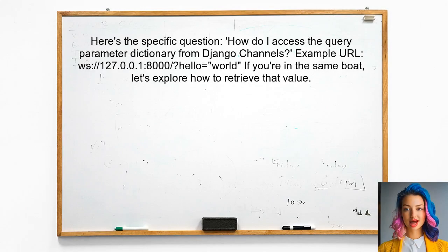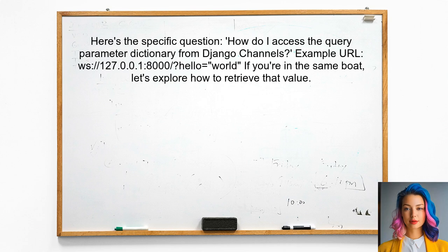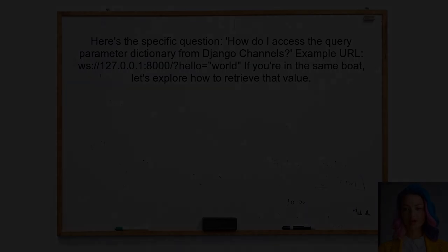Let's dive into the specific question at hand. One user recently asked: how do I access the query parameter dictionary from Django Channels? They provided an example URL — something like ws://127.0.0.1:8000/locals/ — and wanted to know how to retrieve that value.